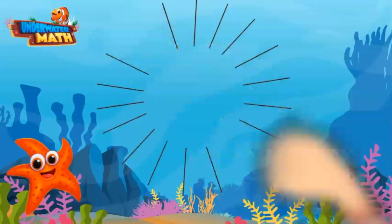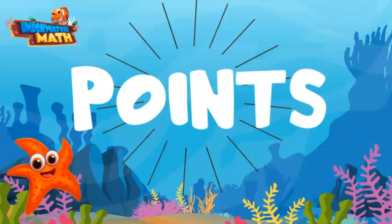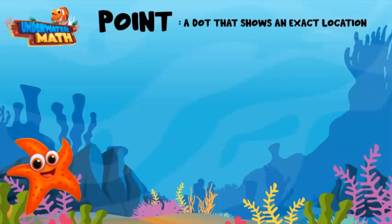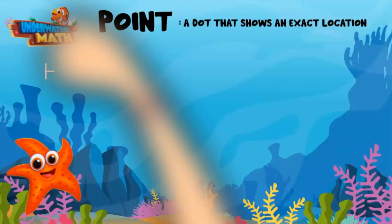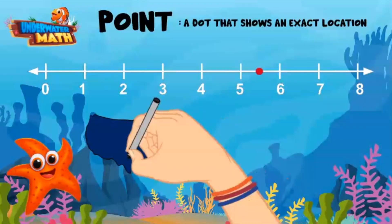Let's start with the most basic of those categories: points. A point looks like a dot or a filled-in circle and shows an exact location. For example, take a look at this point on the number line. It shows the position of 5 because the dot is exactly on the position of the number 5. If we move it over a little bit, now it is in between 5 and 6 and shows the position of 5 and a half.